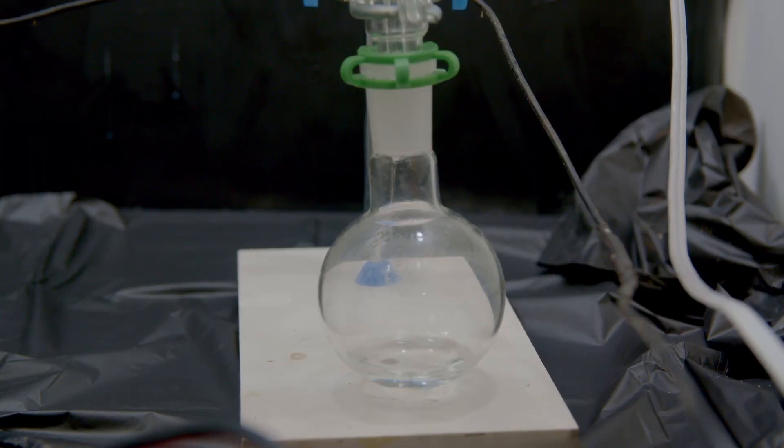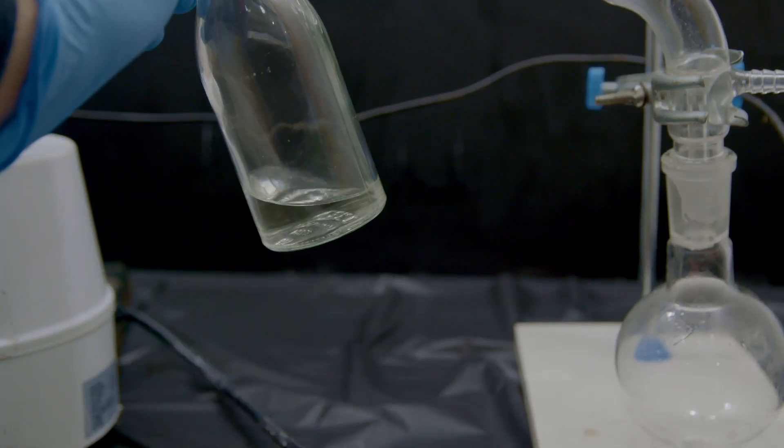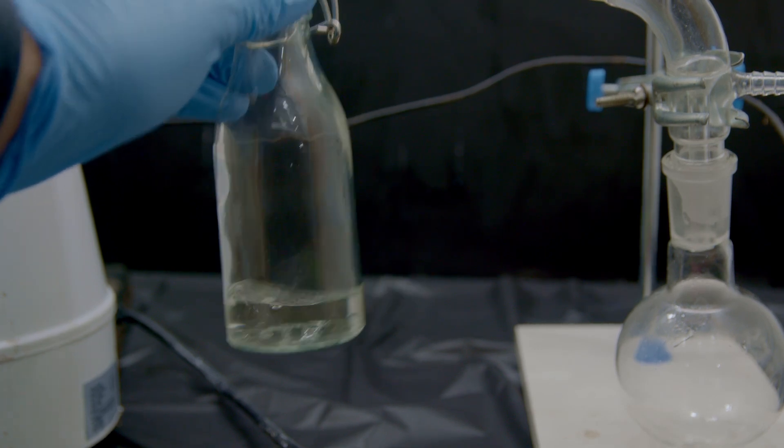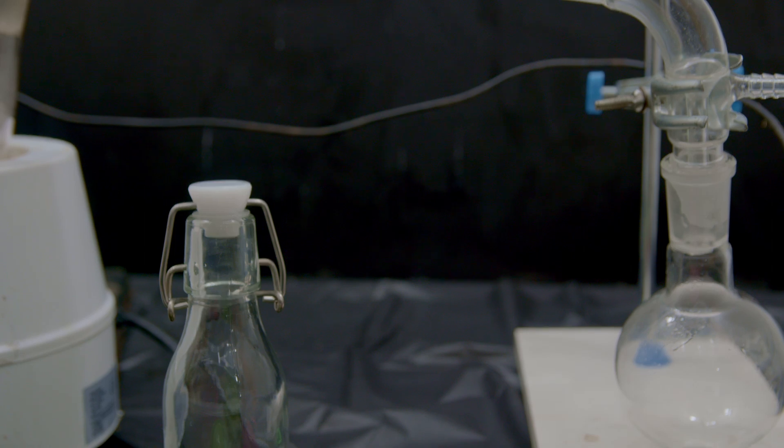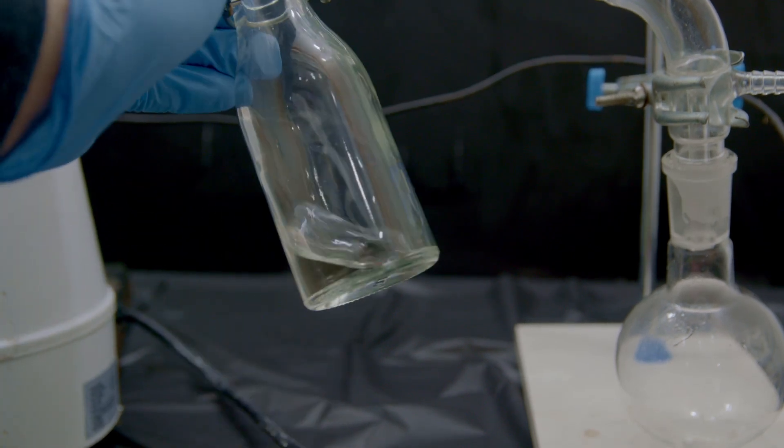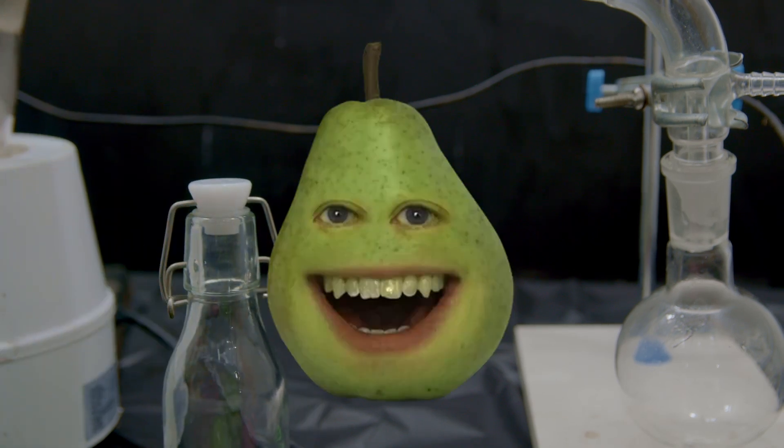And boom, we successfully concentrated vinegar into glacial acetic acid. And let me say this stuff stinks. It is hard to fathom how much this stuff stinks. It is like super vinegar on steroids. And one of the reasons I find that funny is because in our next video we're going to be using this glacial acetic acid to make pear flavoring. So if you're interested in seeing more of that, like and subscribe.